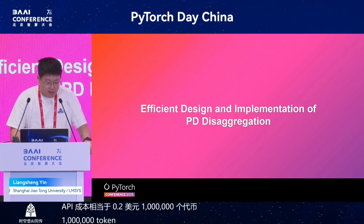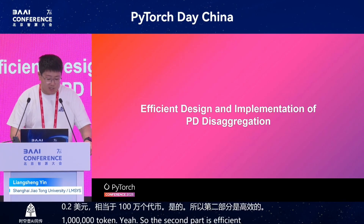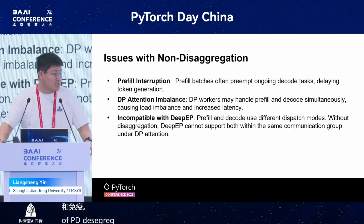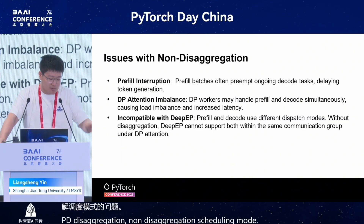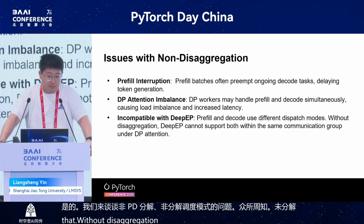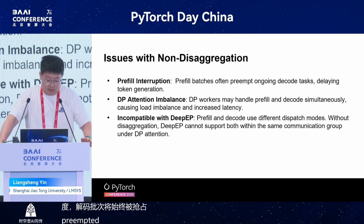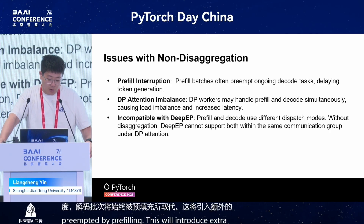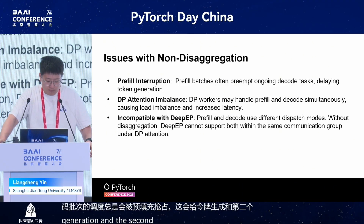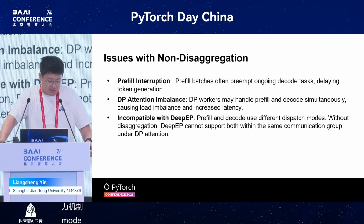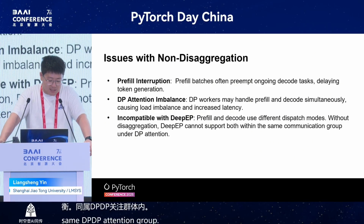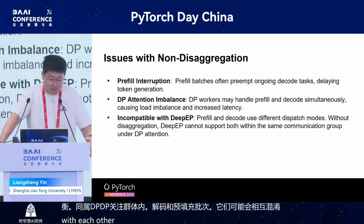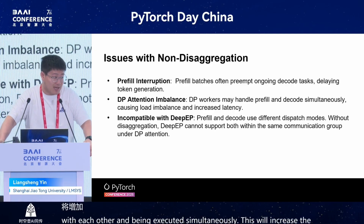The second part is efficient design and implementation of PD disaggregation. Without disaggregation scheduling, decoding batches will always be preempted by prefilling, introducing extra latency to token generation. A second problem is DP attention in non-disaggregation mode, which brings computation and communication imbalance within the same DP attention group. Decoding and prefilling batches may mix and execute simultaneously, increasing decoded token latency and causing load imbalance.